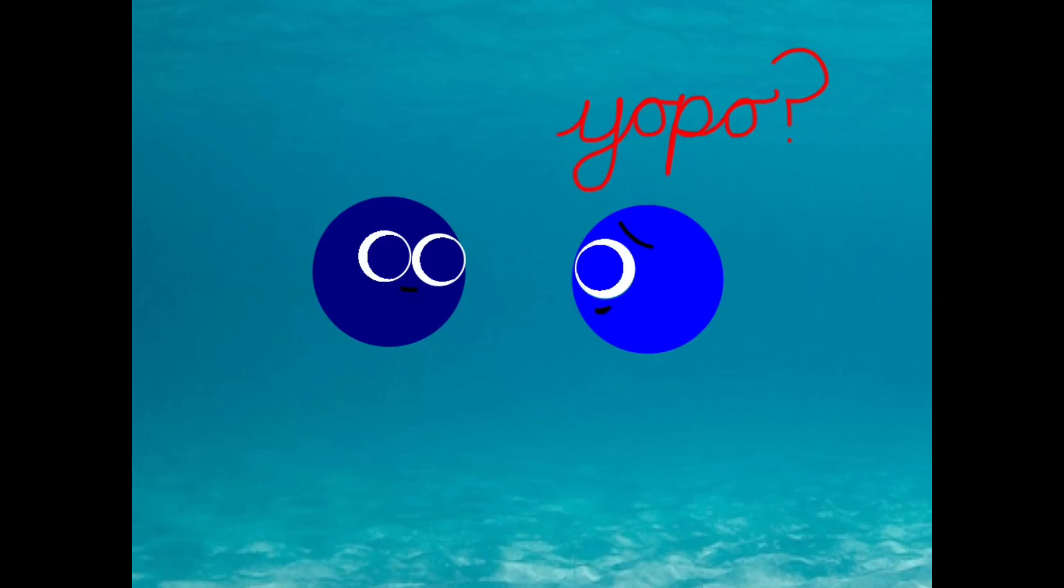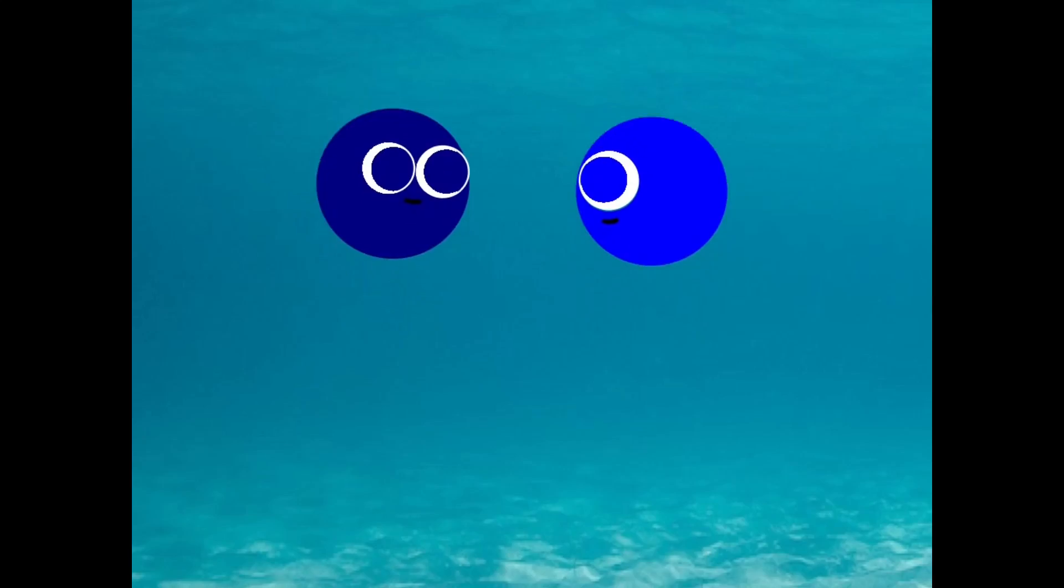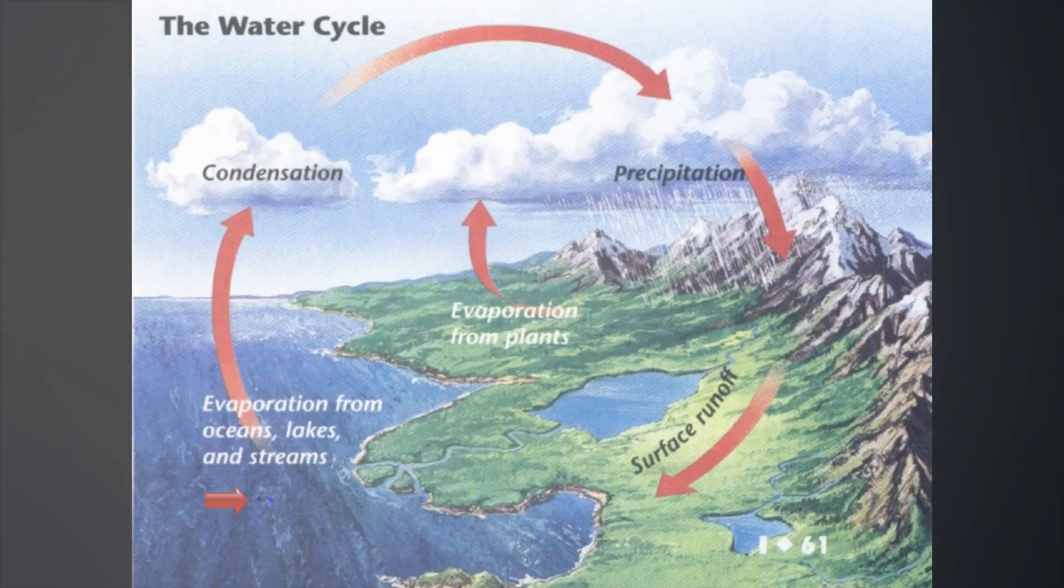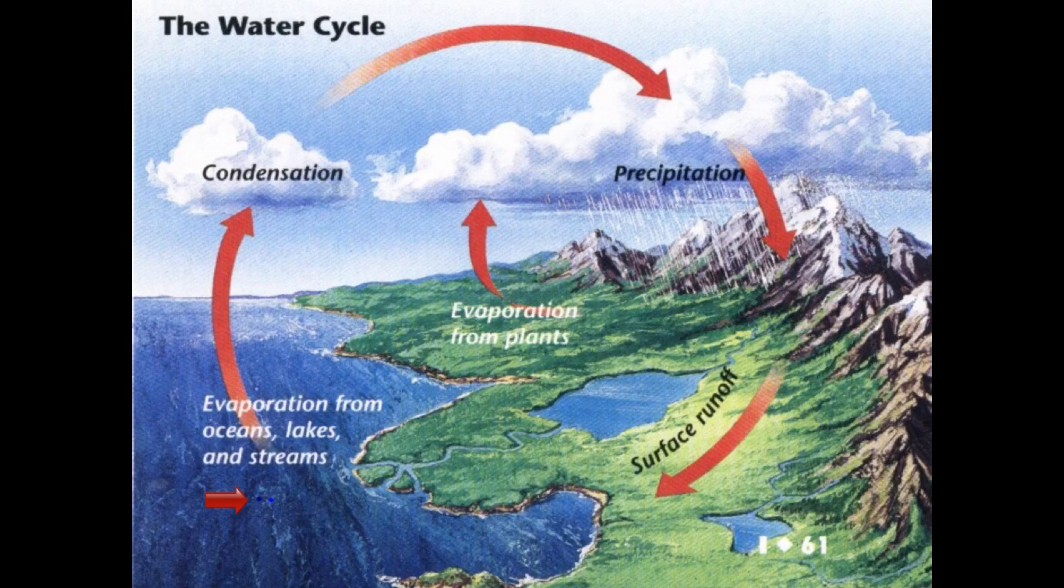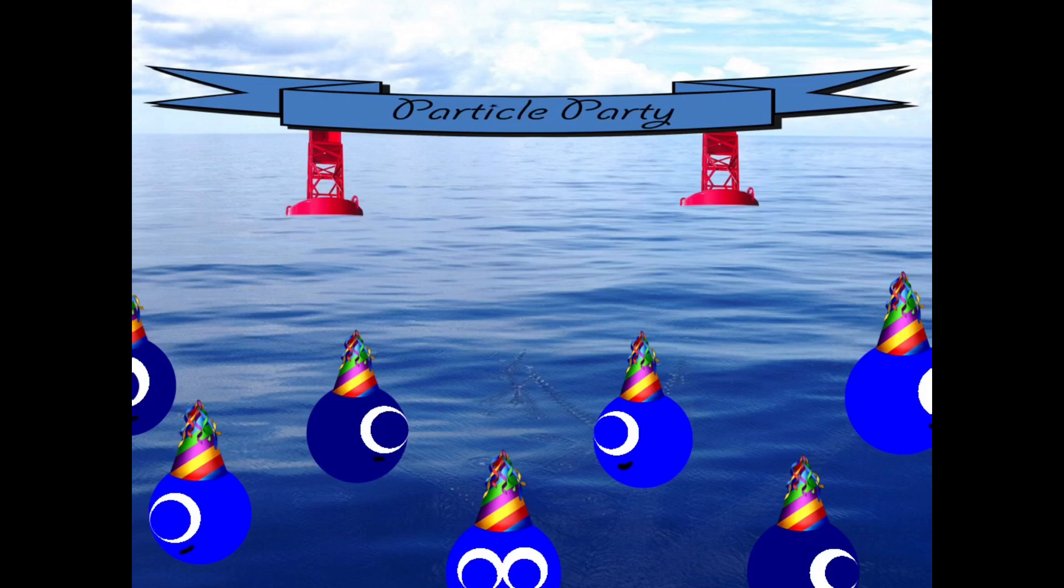Yopo, right? Yopo? Yopo. You only precipitate once. Oh. Okay, follow me. So the two water particles floated to the surface of the ocean. But once they got there, the sun was beating intensely upon them. Why is it so hot? Must be evaporation time. What's that?